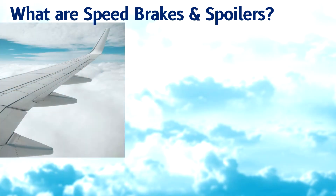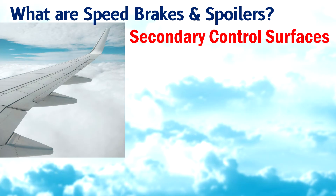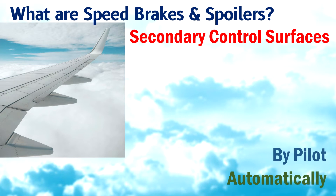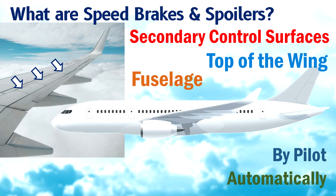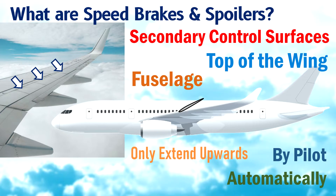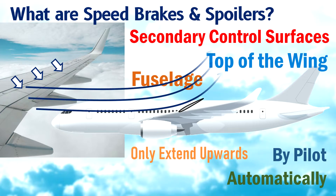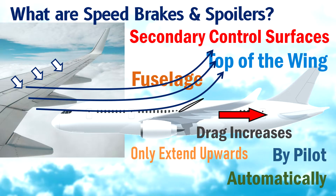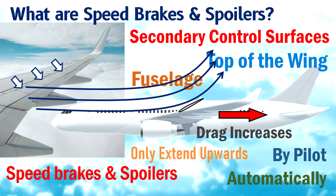Speed brakes and spoilers are secondary control surfaces that can be extended by the pilot or may extend automatically. Both speed brakes and spoilers are installed on the top surface of the wing or on the fuselage and can only extend upwards. When extended, the drag acting on the aircraft increases so the speed reduces. Although the function of both these control surfaces are the same, there are a few differences.